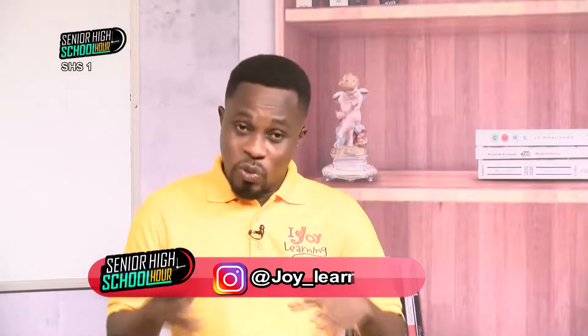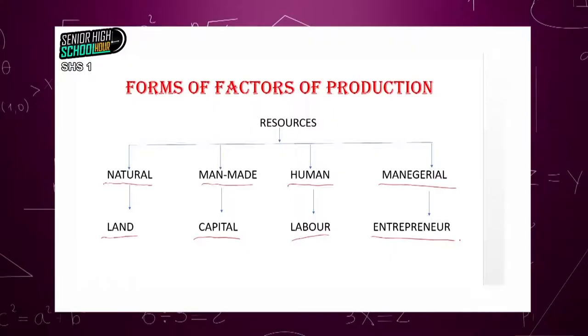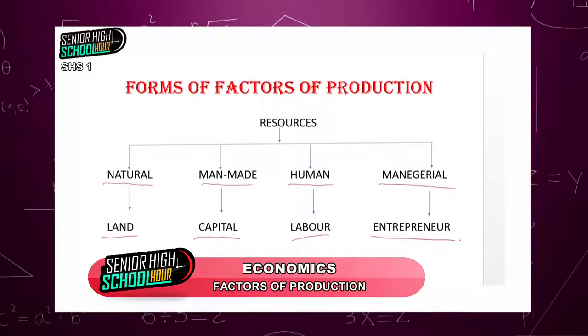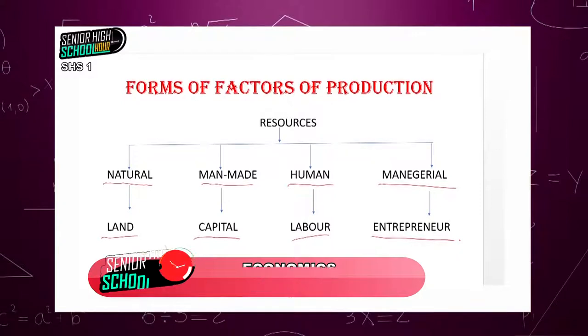By way of summarizing: resources used for the production of goods and services are classified as factors of production. These factors of production can be natural — natural resources are known as land in economics. They can be man-made — man-made resources are known as capital. They can be human — human resources are classified as labor. And lastly, the managerial service to these resources is also a resource in economics, named entrepreneur.